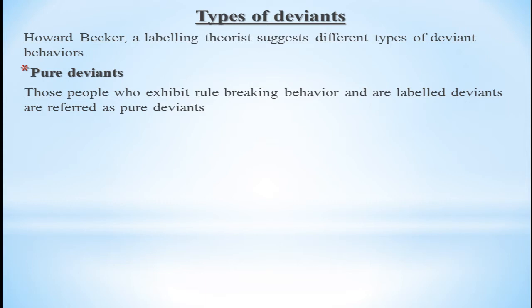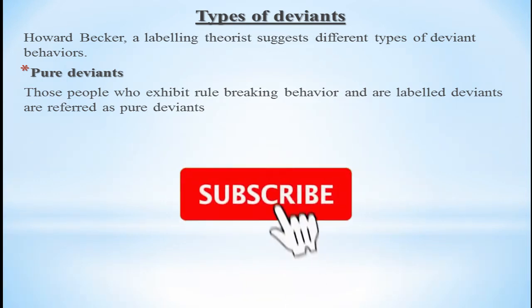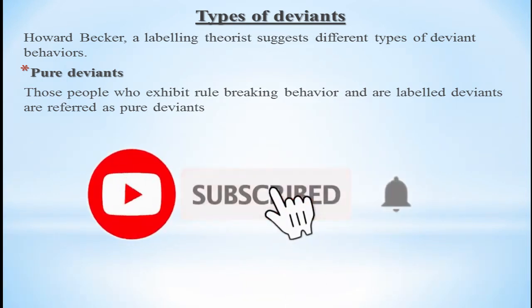So let's know about the types of deviants. The first one is pure deviants, then secret deviants, the third one is falsely accused. And the fourth category is not actually a type of deviant — it is the confirming citizens, who are law-abiding citizens.